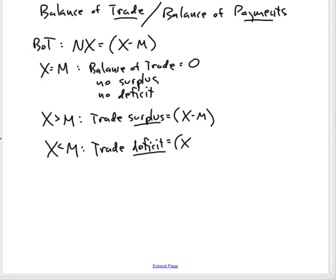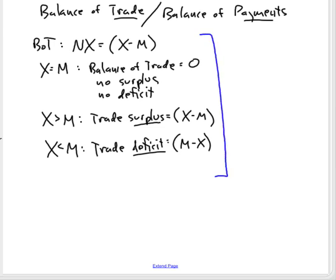The deficit would be equal to — if there's a deficit of $100 billion a year, that means imports are $100 billion more than exports. Now, another way to describe this is the current account.